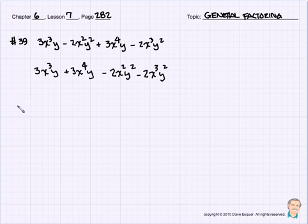And let's take a stare at the first two terms, and I bet we can factor out a 3x cubed y. And if we do that for these first two terms, this one and this one, we end up with 1 plus x.